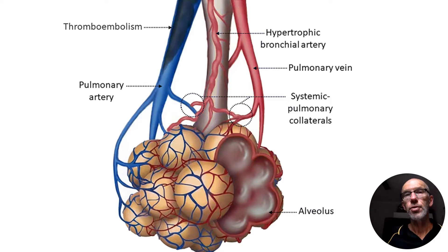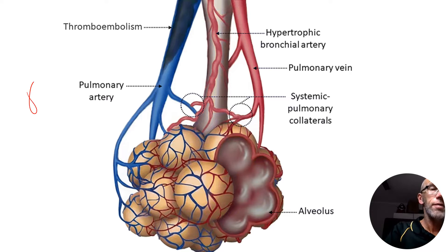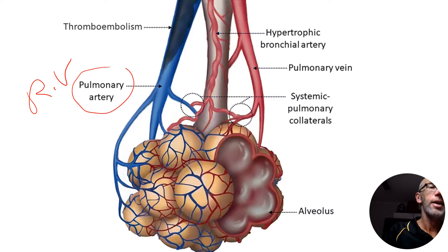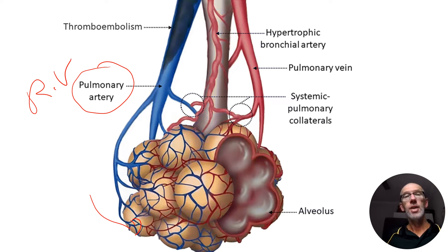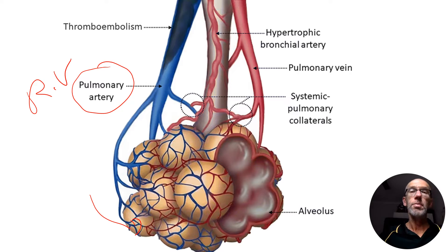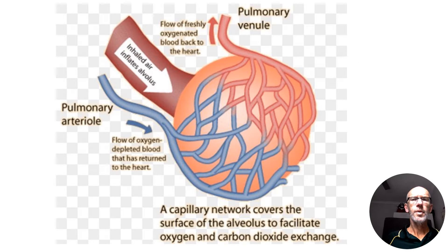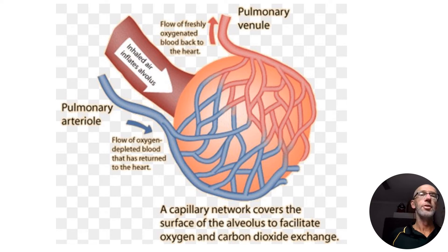Let's backtrack to the circulatory system and talk about the blood vessels. It's the right ventricle that has pumped out oxygen poor blood, which travels via the pulmonary artery through to capillaries that attach to the alveoli, and then the gas exchange occurs. The blood is now oxygen rich, so it goes back into the blood vessels via the pulmonary vein and enters the heart through the left atrium. This is where the gas exchange occurs between the respiratory system and the circulatory system.